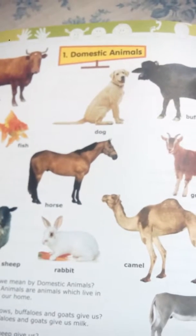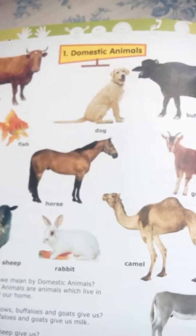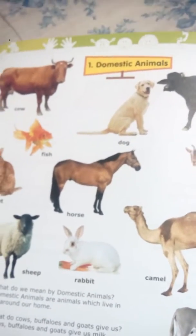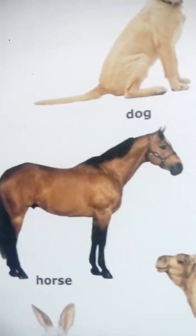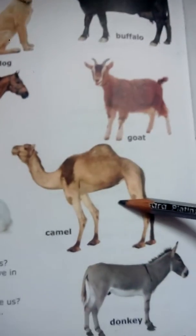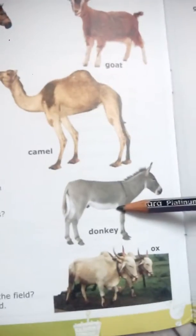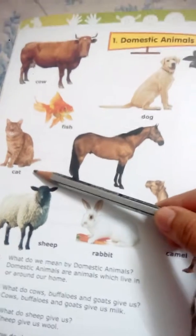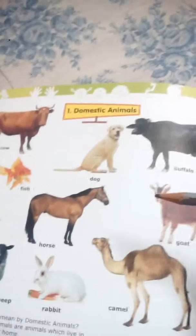The animals which we can keep at home are called domestic animals. Now here I have shown some pictures to list the domestic animals. Here we can see a cow, a fish, horse, dog, buffalo, goat, camel, donkey, ox, rabbit, sheep, and cat. These are all domestic animals.